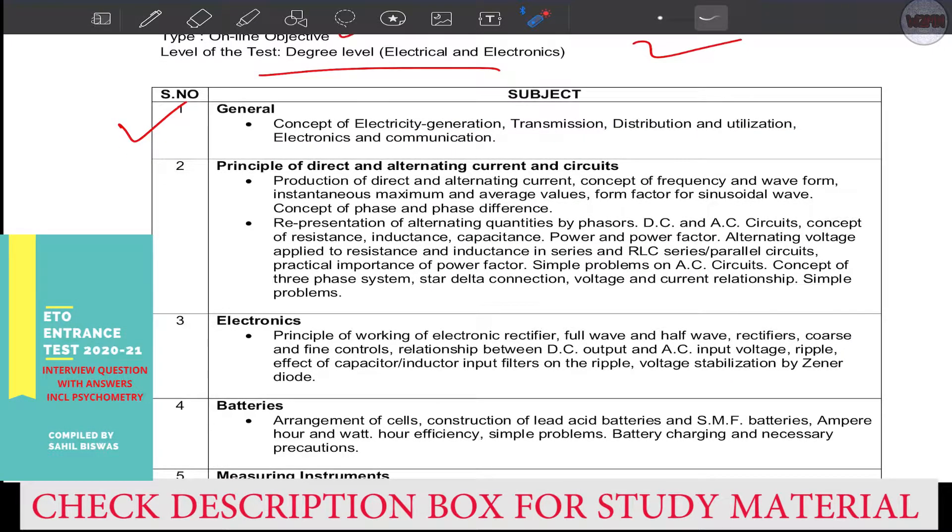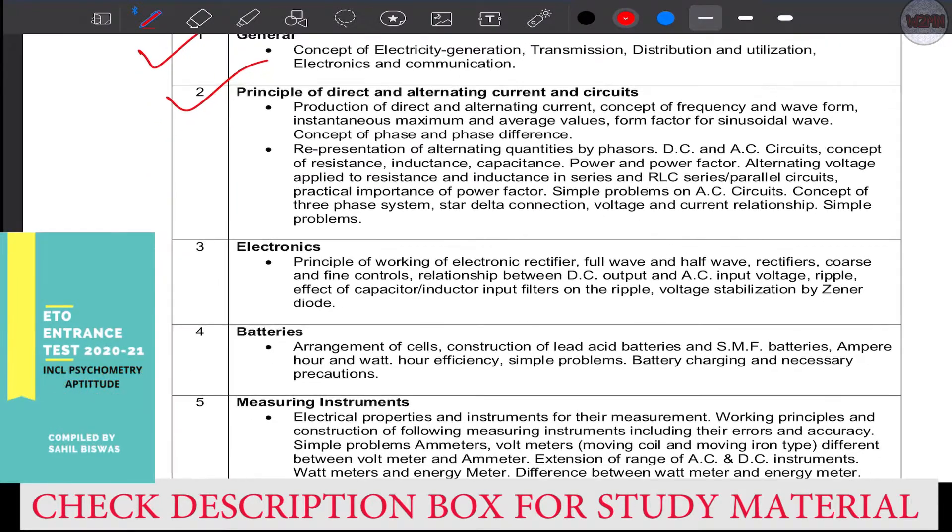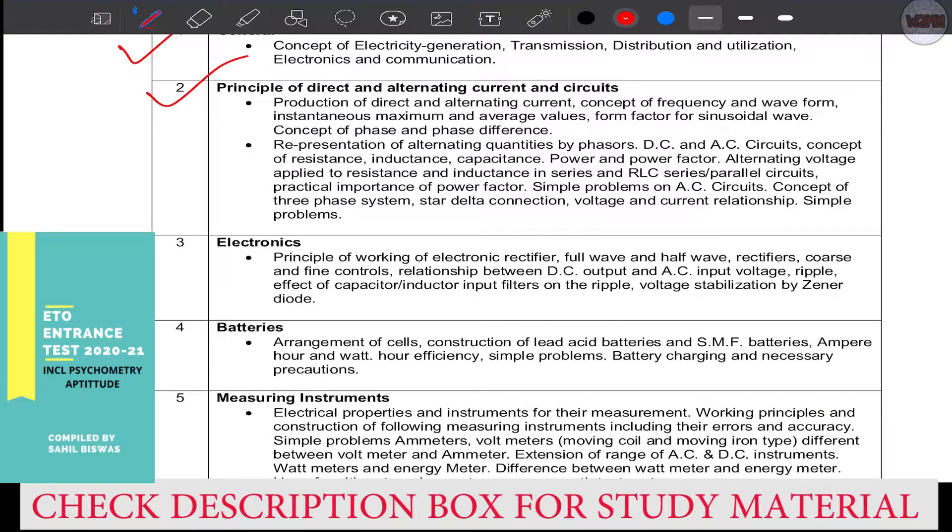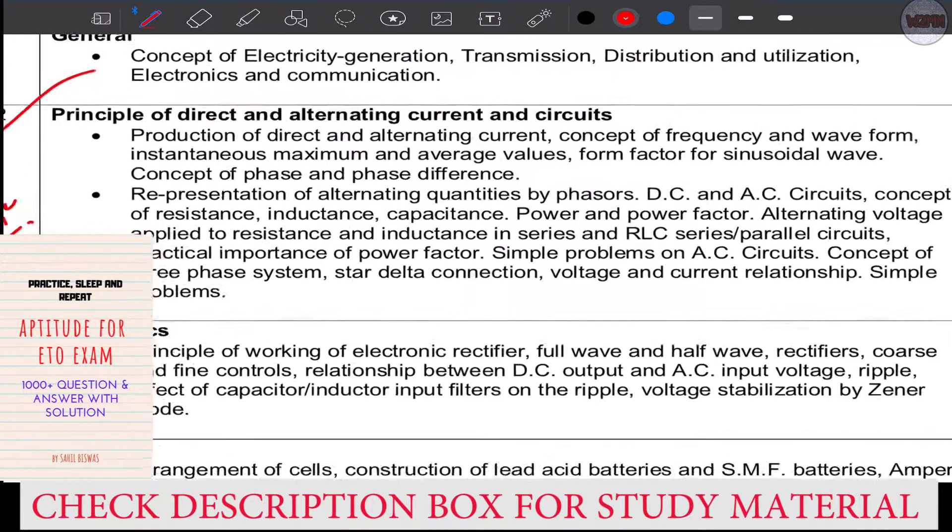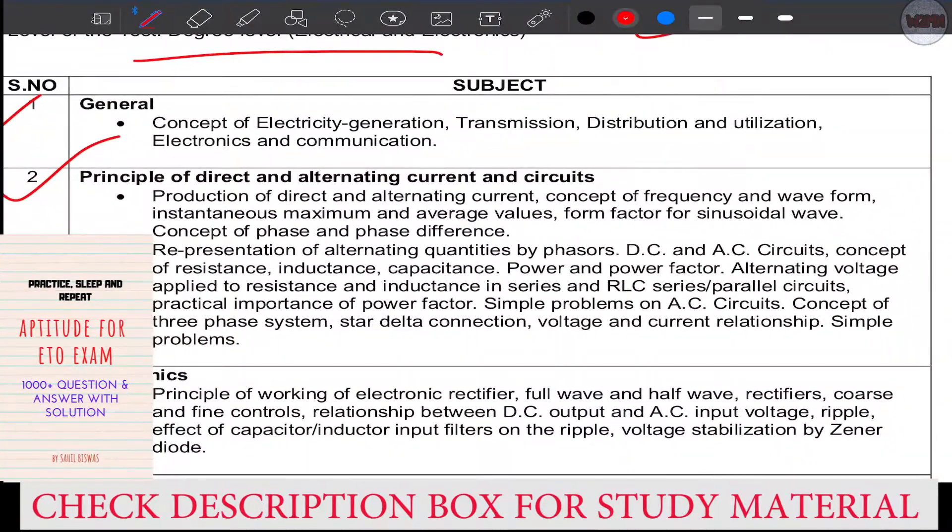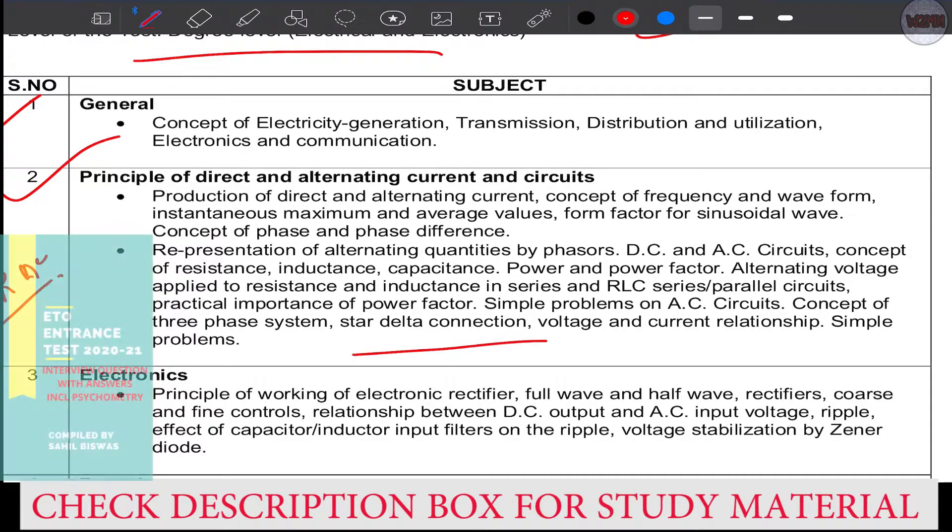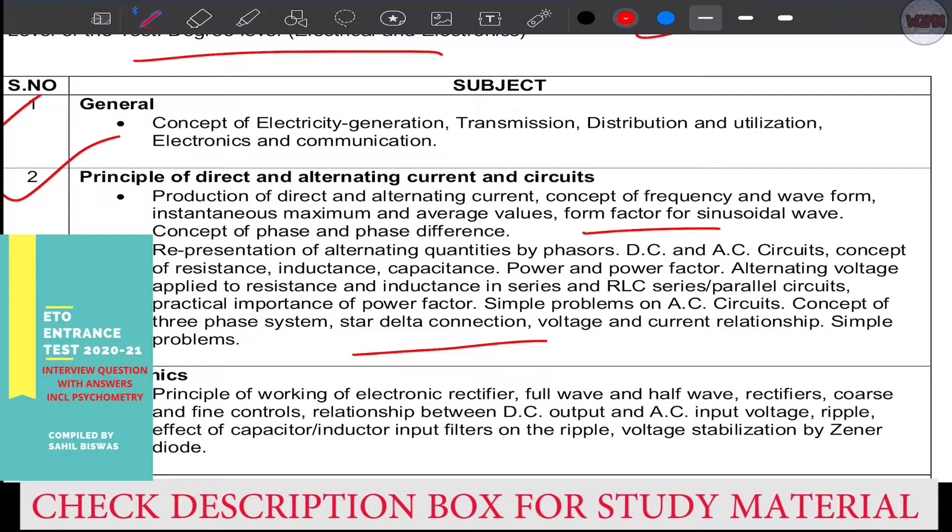Second is the principle of direct and alternating current and circuits - DC and AC. You can see the subtopics. You can take a screenshot or download this from Google. Just write down ETO syllabus for Anglo-Eastern and you'll get the PDF.